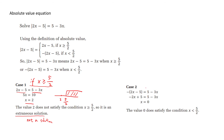For case 2, if x is smaller than 5 over 2, we continue to solve the equation and get x equal to 0. Here, 0 satisfies this condition, so 0 is a solution.